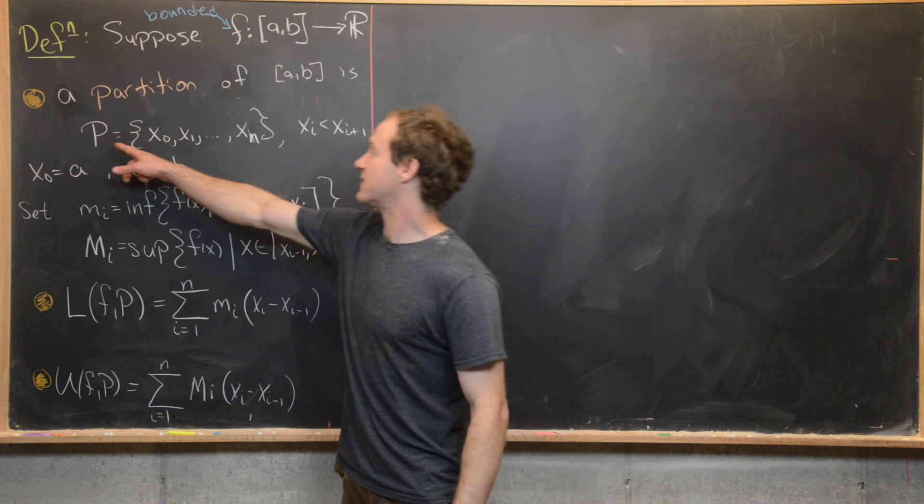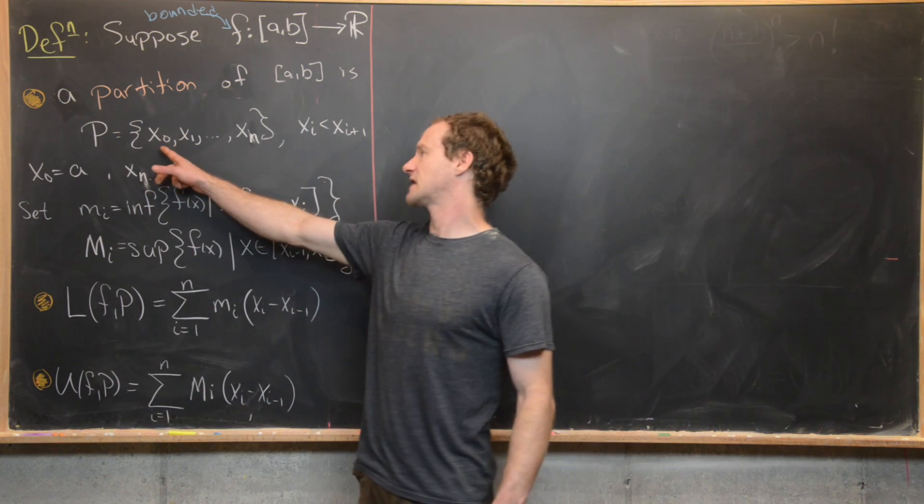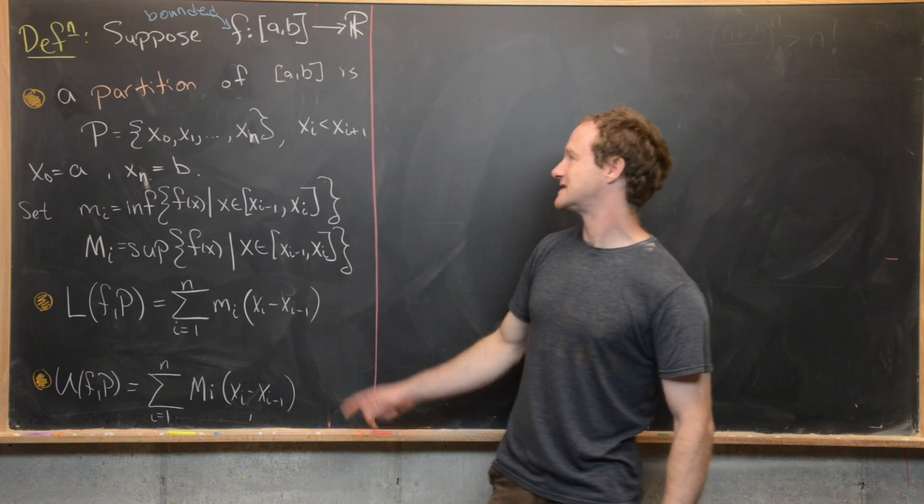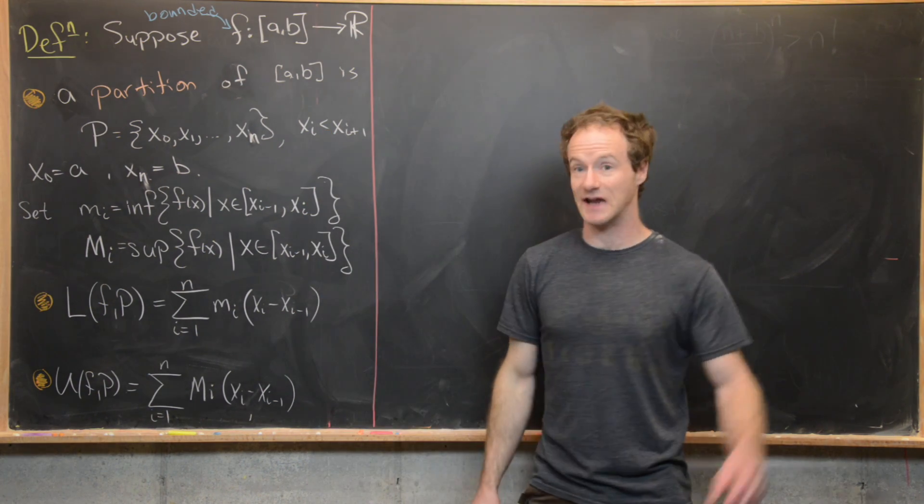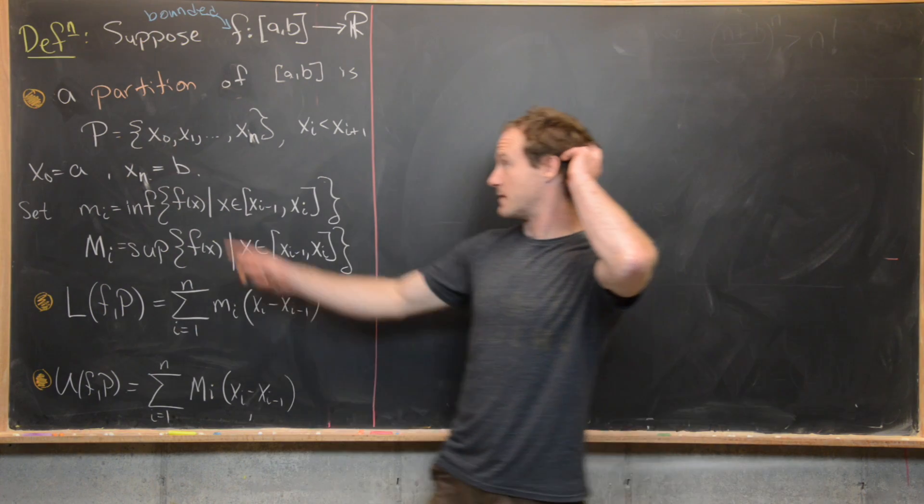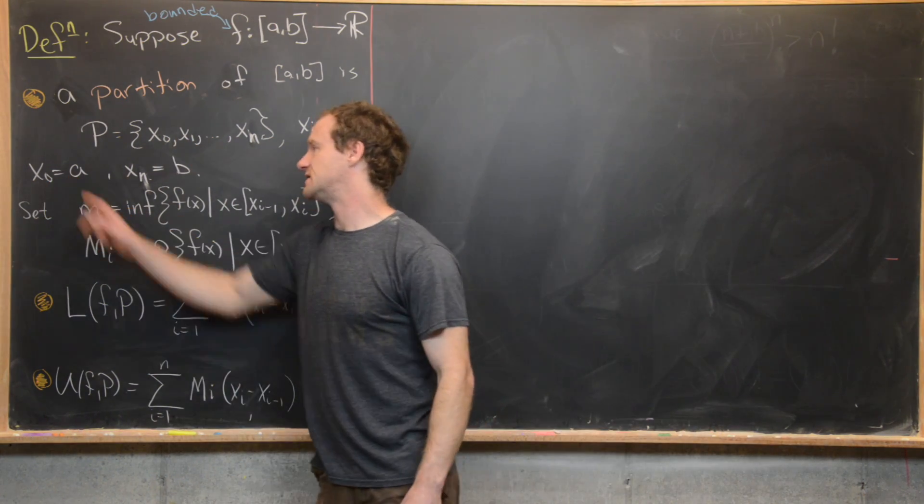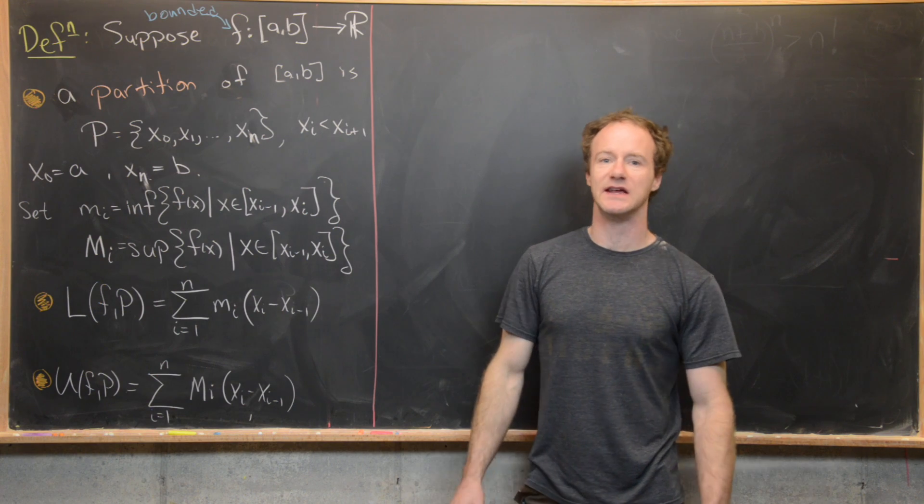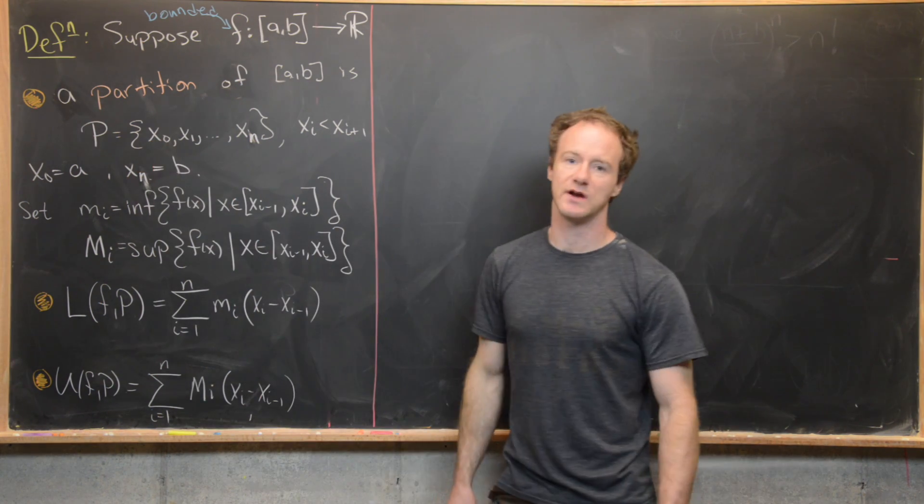So it is a finite set of numbers, which we'll call P. So x_0, x_1, up to x_n that satisfy three properties. So x_i is less than x_{i+1}, so that means these numbers are increasing. And x_0 is equal to a and x_n is equal to b. So the smallest one is a and the largest one is b.